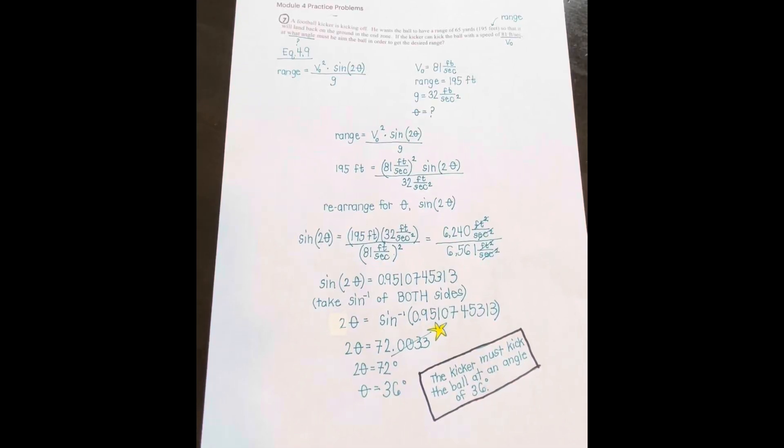Module 4, Practice Problems. This is question number 7. A football kicker is kicking off. He wants the ball to have a range of 65 yards, which is 195 feet, so that it will land back on the ground in the end zone. If the kicker can kick the ball with a speed of 81 feet per second, at what angle must he aim the ball in order to get the desired range?